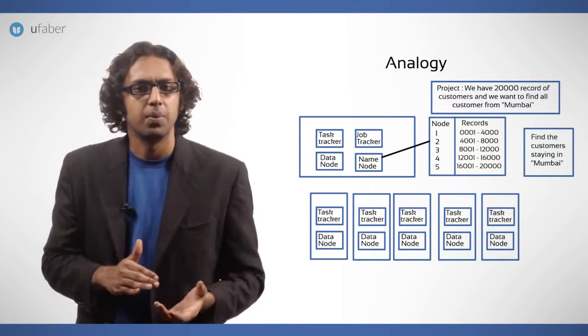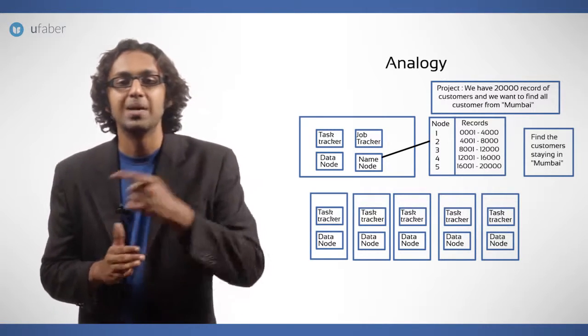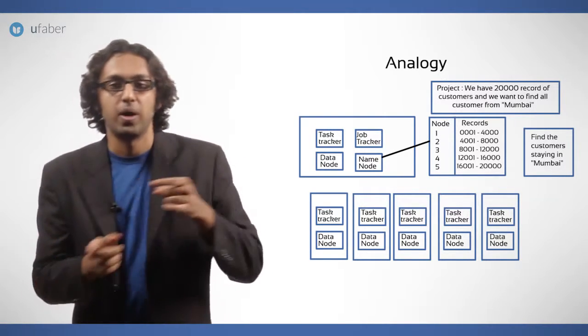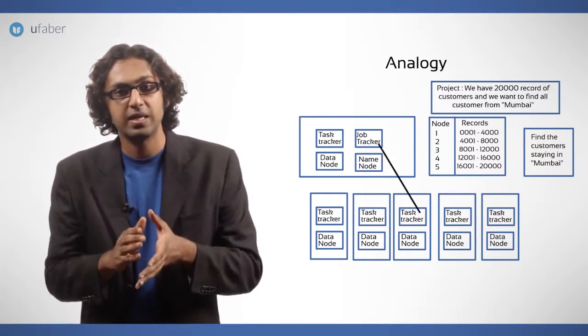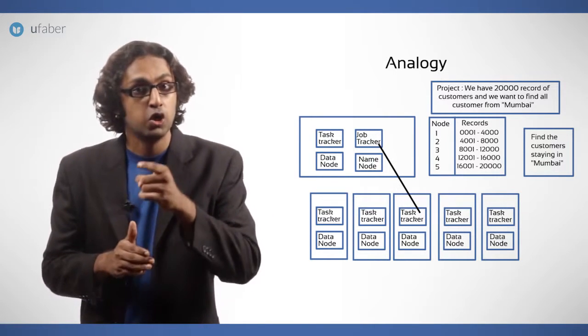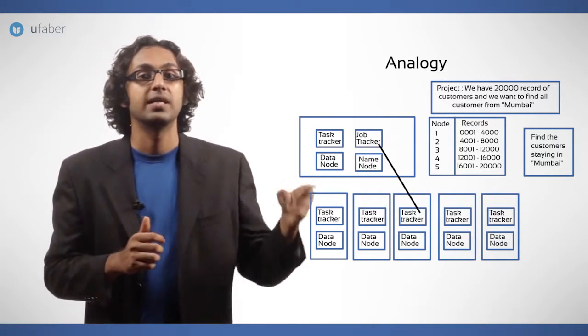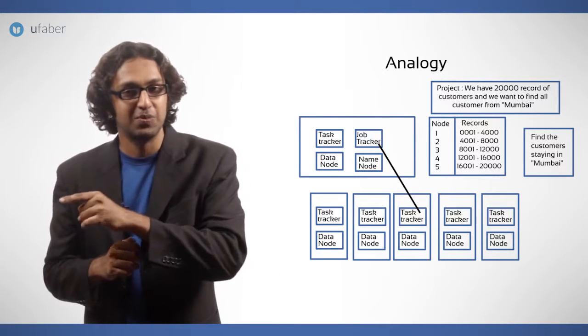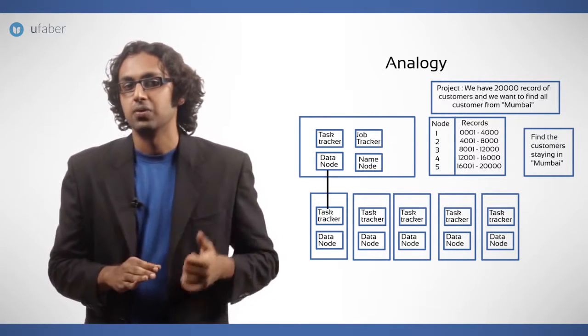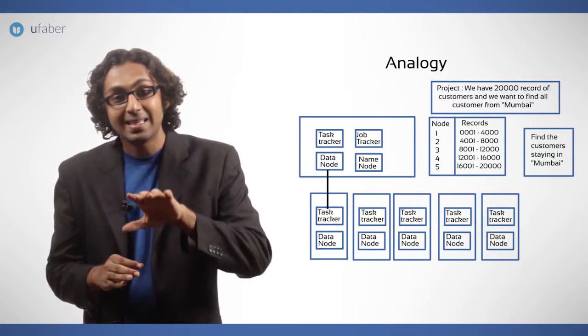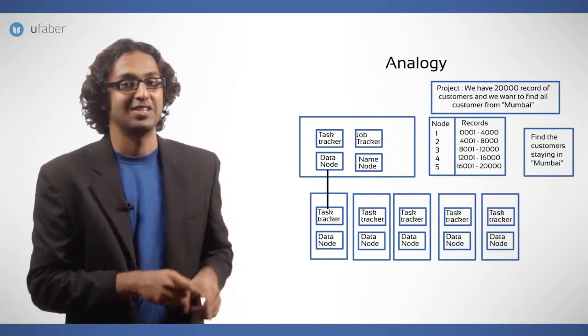Now the job tracker will inquire about the location of data to name node. And the name node provides this. The job tracker then commands the task tracker to perform the computation on the data. That is, to find the customers from Mumbai. Each data node will filter out the customers from Mumbai and the collected result is placed in HDFS.